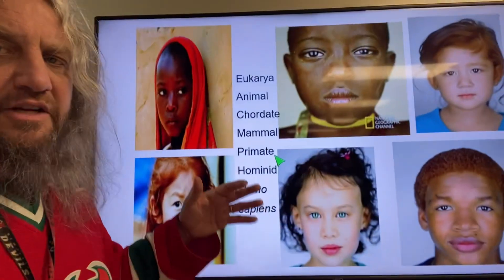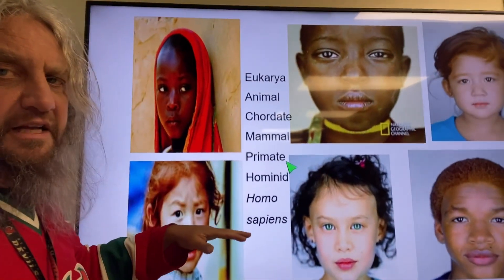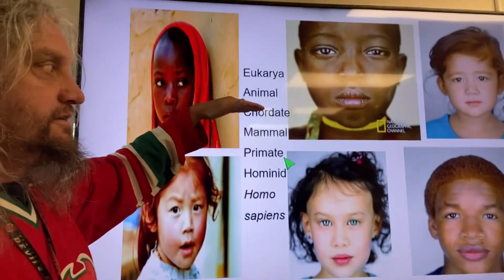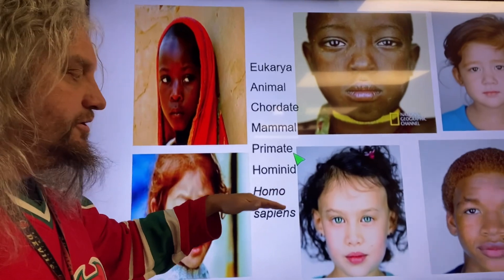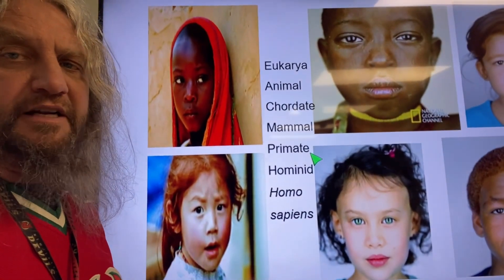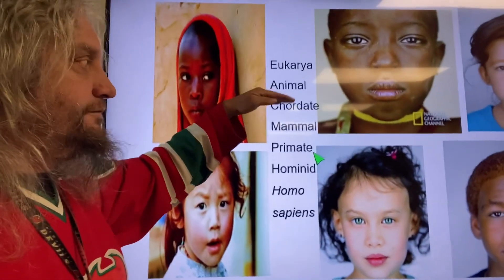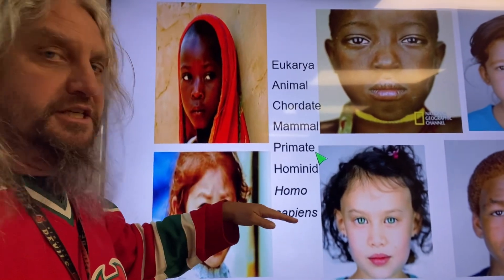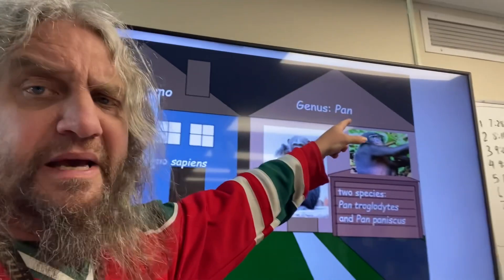We have an official genetic address — this is where we rank, where we sit in the world of organisms. We are eukaryotic, animal, chordate, mammal, primate, hominid, homo. And we're in the species of sapien — Homo sapiens is our scientific name. That's where we fit: domain, kingdom, phylum, class, order, family, genus, species. Our closest genetic relatives are in the genus pan.